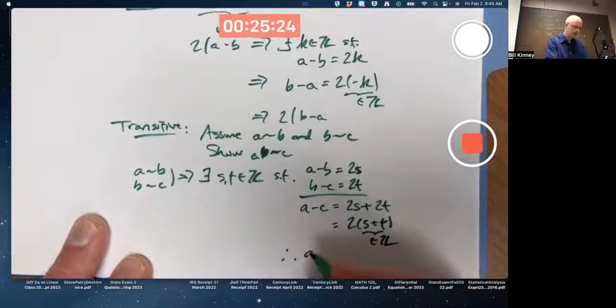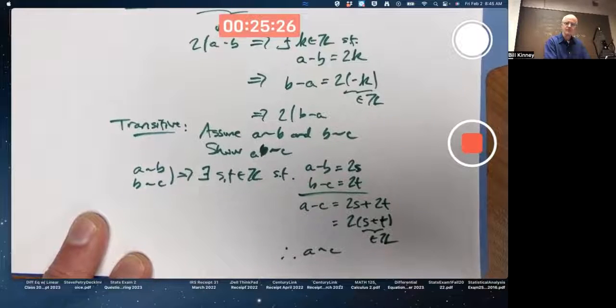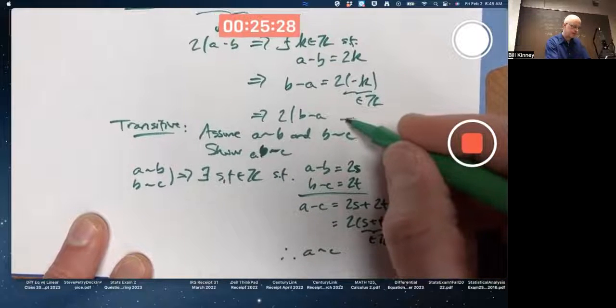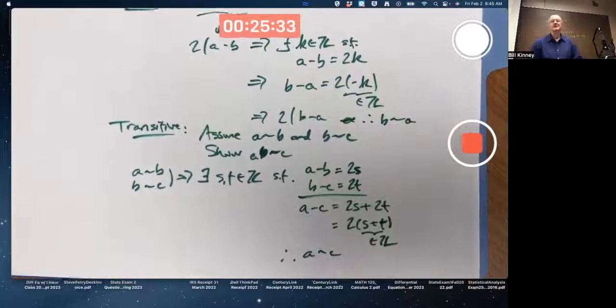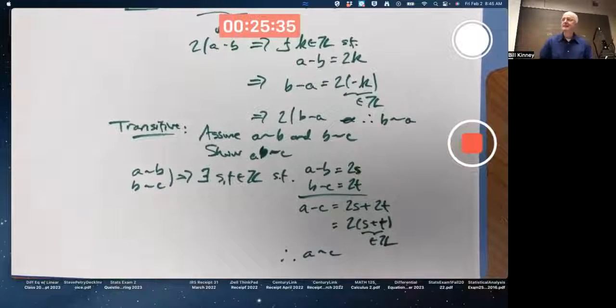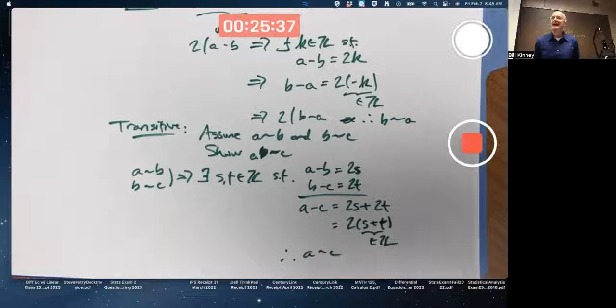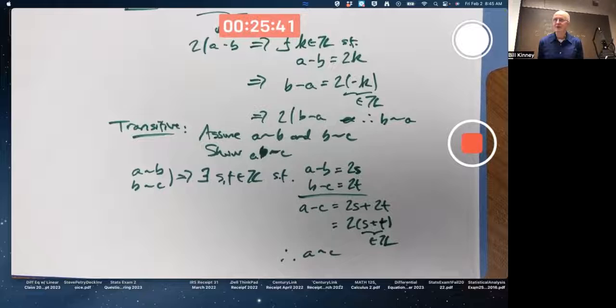Therefore, A is equivalent to C. Back up here, I should have said therefore B is equivalent to A. Doing this fast, I'm making some mistakes. That went by too fast. You can rewatch part of the video here.